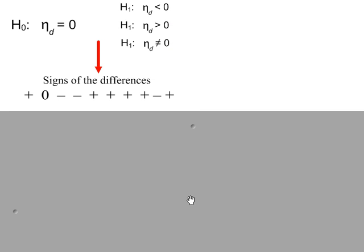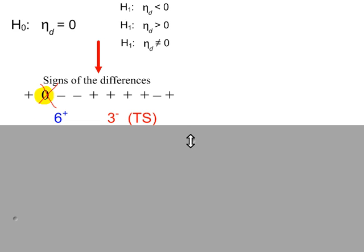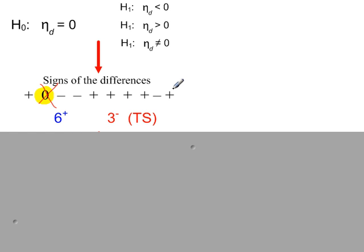Work out the signs. Cross out any zero differences. So there are six plus signs and three minuses. The smaller out of these two becomes your test statistic. So three is the TS value.